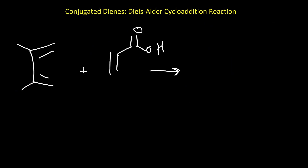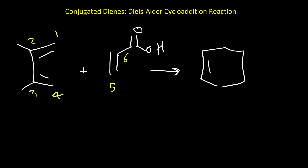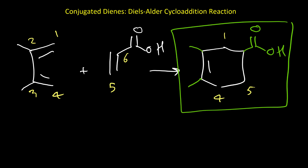Here is another example. Again numbering carbons 1 through 5 on the diene and dienophile, we should have a cyclohexene product with carbons 1 through 6. On carbons 2 and 3 we should have methyl groups, and on carbon 6 we should have a carboxylic acid group. Here is our product for this reaction.